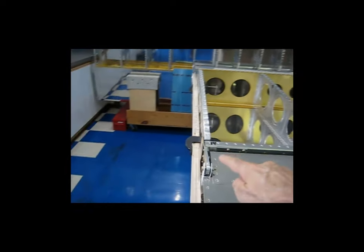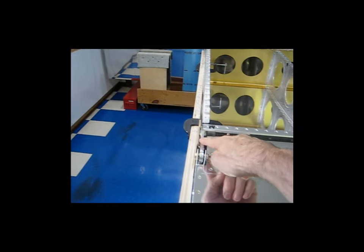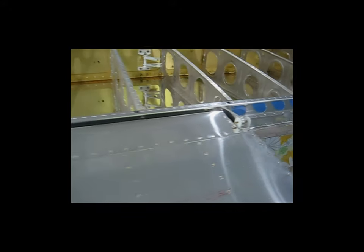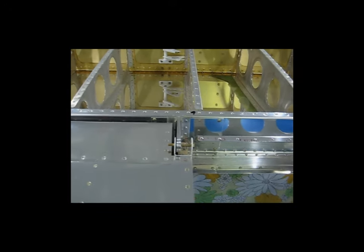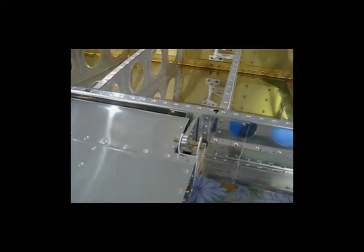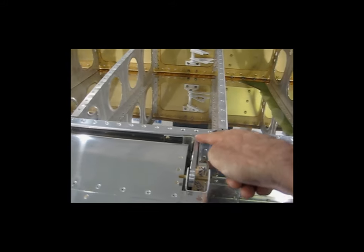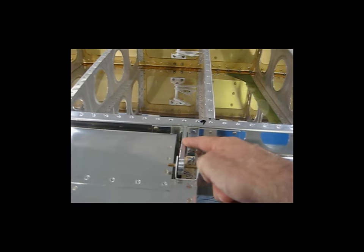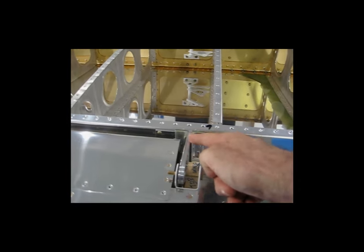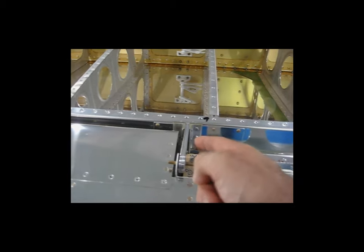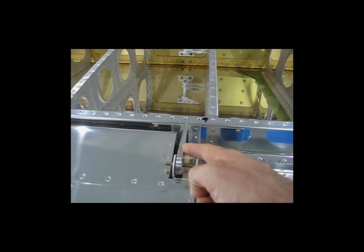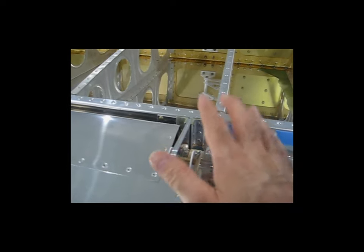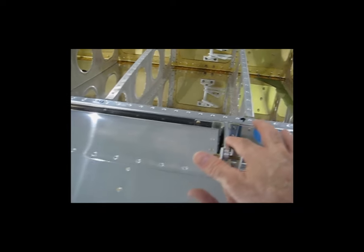The first thing is, before you put the aileron on and do any of your alignment, jigging, rigging, anything like that, check to make sure that these brackets, these aileron attach brackets, are straight. These two are not bad. And this one's got a little bit of a curve to it. I think it's just from the stamping process when the part was actually formed.